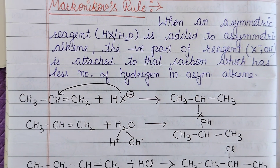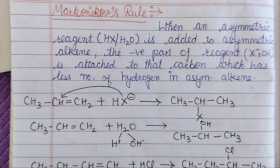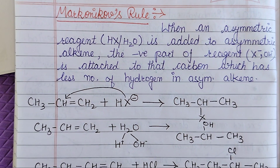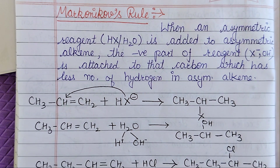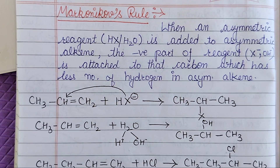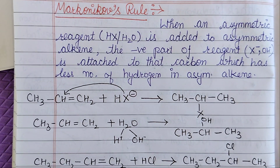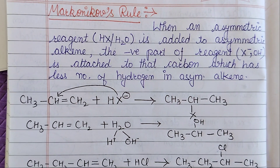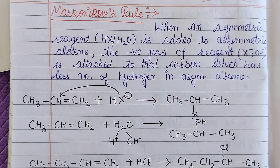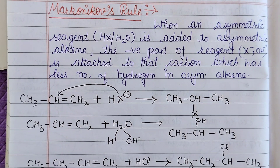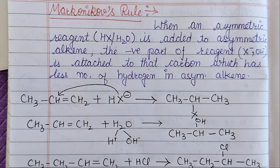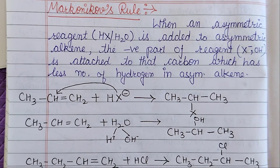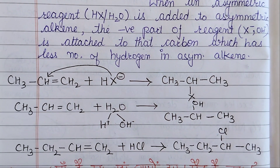Let's start with Markovnikov's rule. When an asymmetric reagent is added to an asymmetric alkyne, the negative part of the reagent will attach to the carbon which has fewer number of hydrogen atoms in the asymmetric alkyne.